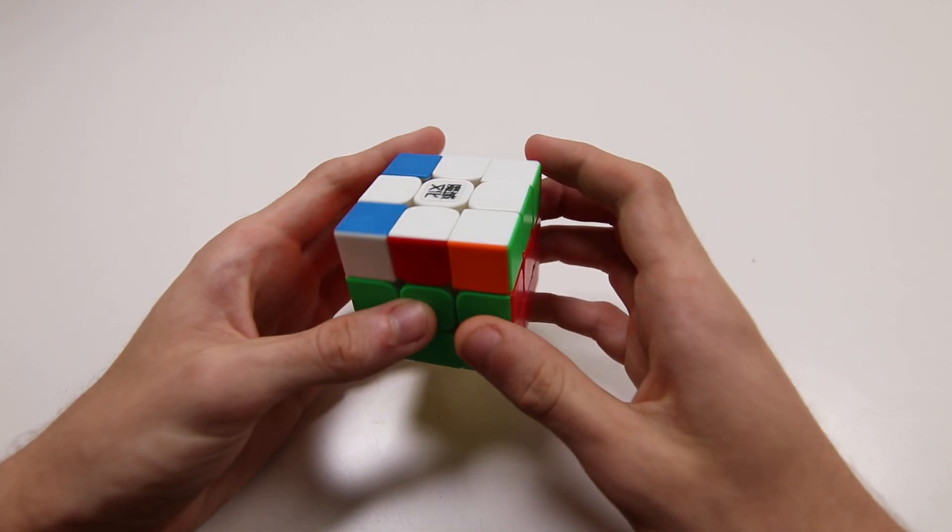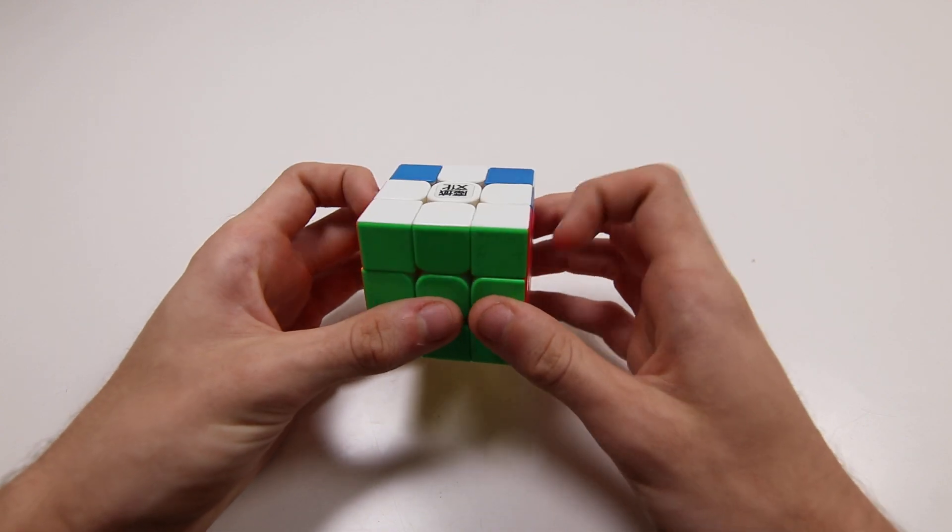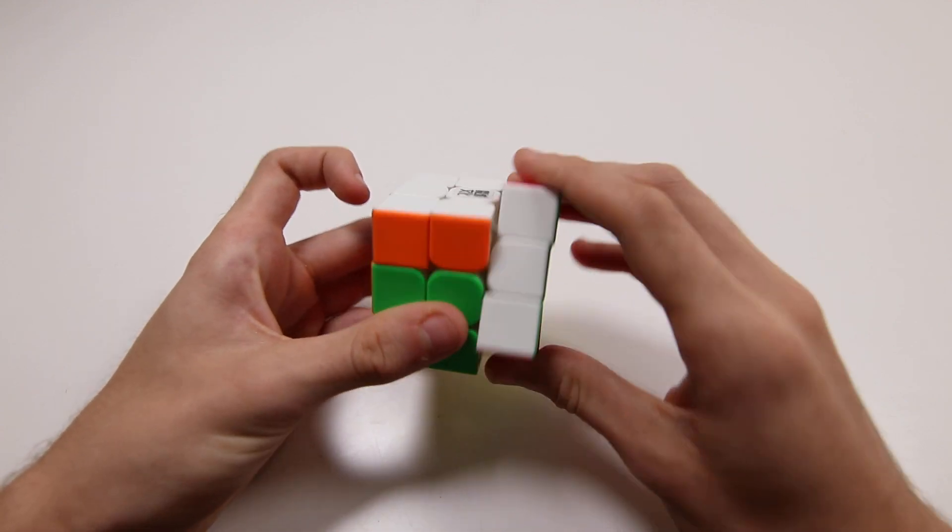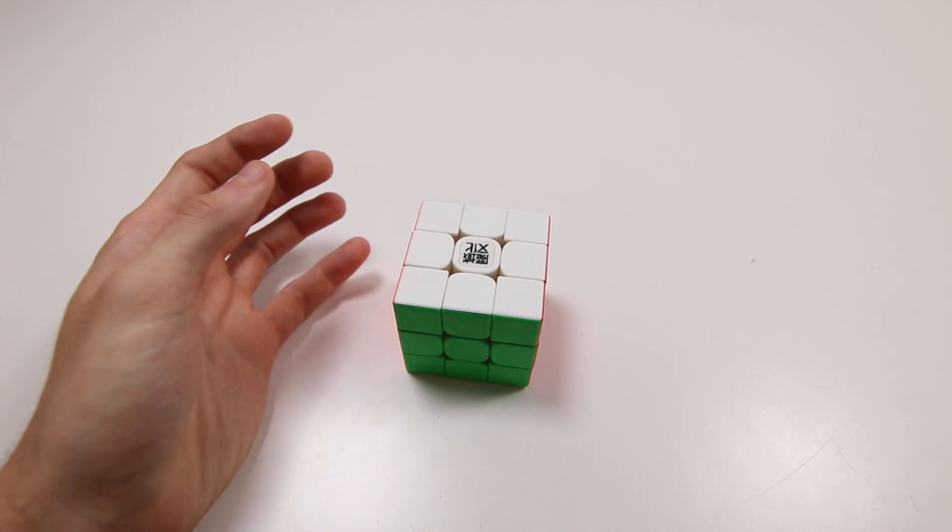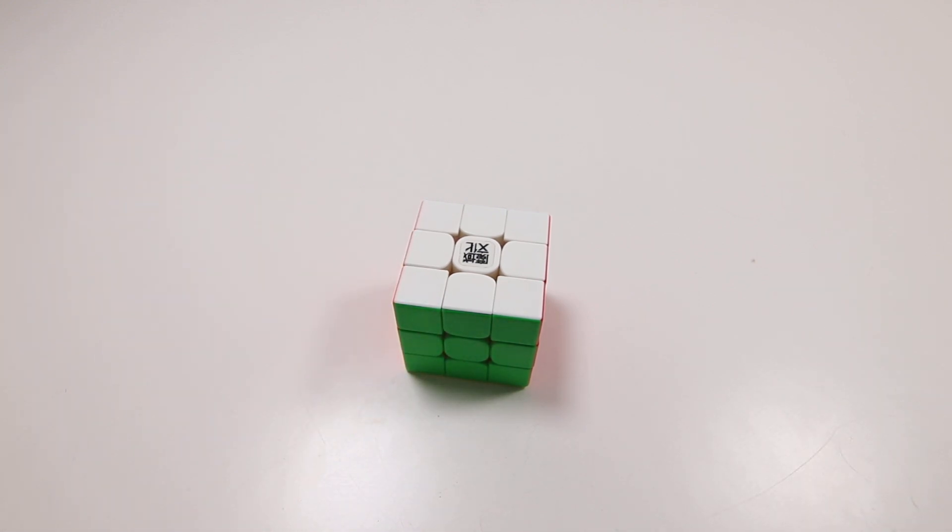So like here if I do Fruruff I'll get this ZBLL which I quite like because I can just do it from like one slot. I've tested like a bunch of different variants and I think when you want to balance recognition look ahead and how good the algs are I think this is the best way to go personally.